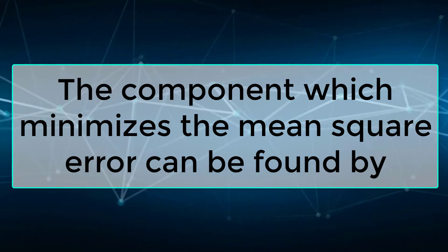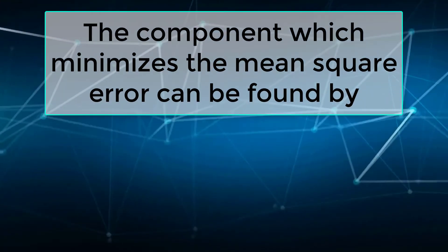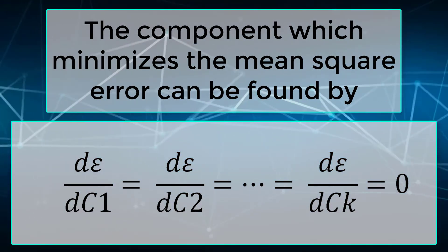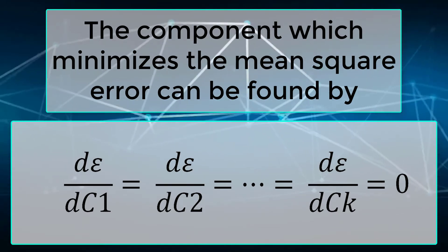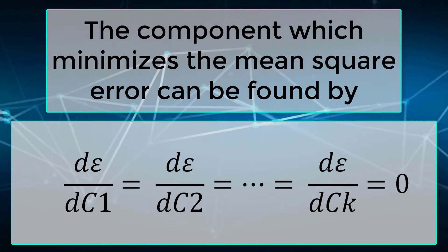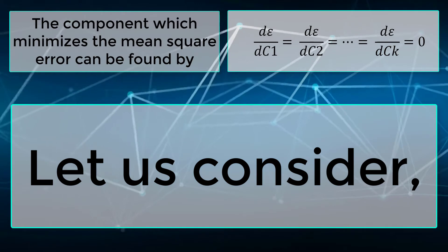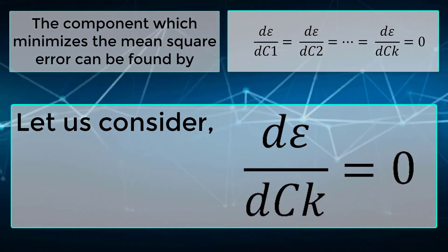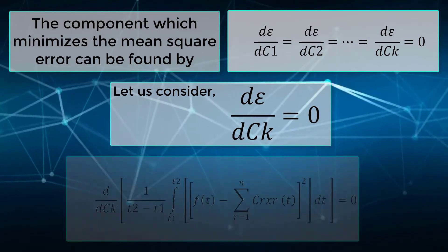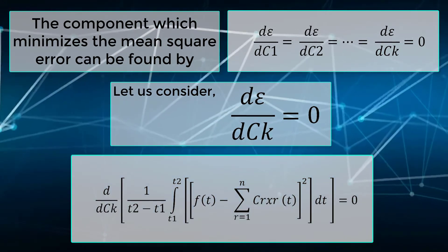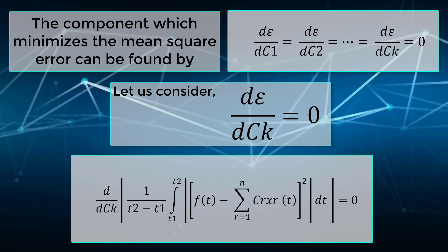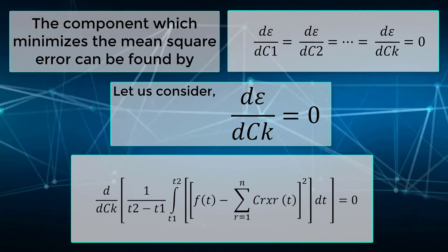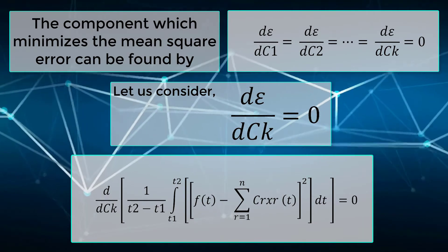The component ck which minimizes the mean square error is found by setting the partial derivative of epsilon with respect to ck equal to zero. That is, d(epsilon)/d(ck) equals zero. Taking the derivative: d/d(ck) of 1 over (t2 minus t1) times the integral from t1 to t2 of f(t) minus the summation from r equals 1 to n of cr times xr(t), all squared, dt equals zero.